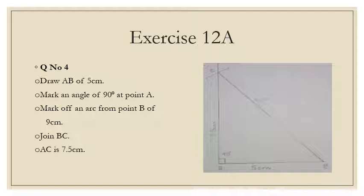In question, we are provided with AB of 5 cm, BC of 9 cm, and angle at A 90 degrees. Finally, we have to find out AC length, the length of AC.